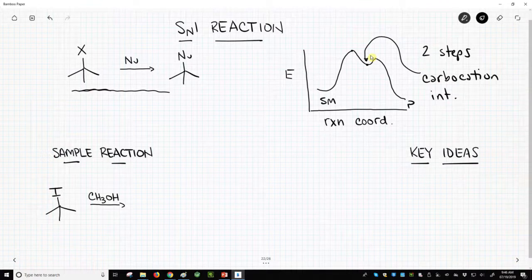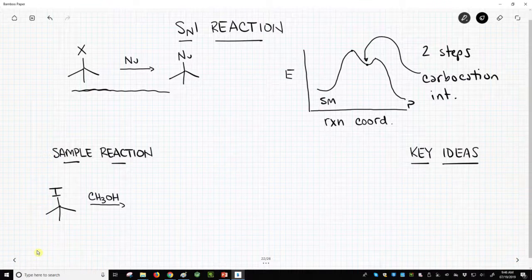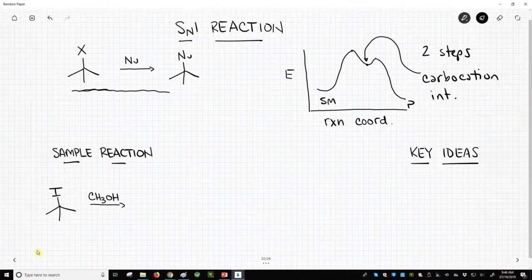So let's look at the sample reaction. On this energy coordinate, I've shown it being two steps. We're actually going to do a third step on this. I'm going to show three steps, but classically, people consider the SN1 to be a two-step process. What is that first step?